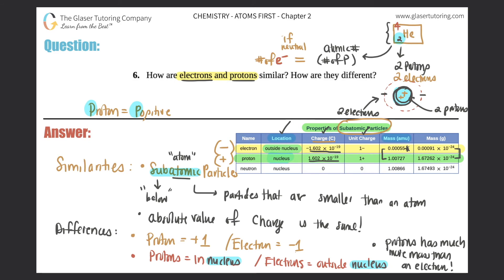They usually like to give that question on a test — they'll say, where is most of the mass located in an element? It's located in the nucleus, because in the nucleus you have protons and neutrons, and that's where all of your mass is coming from. The protons and neutrons weigh much more than an electron. So the similarities are: they're both subatomic particles, and they both have the same absolute value of charge in Coulombs. The differences are: protons are always positively charged, electrons are always negatively charged; protons live inside the nucleus, electrons live outside; and protons have much greater mass, which is why the nucleus weighs much more than the outside — called the electron cloud.